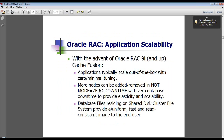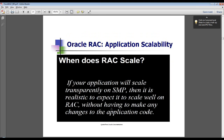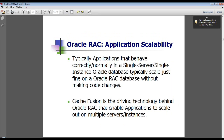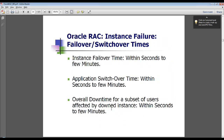How do applications adapt to Oracle RAC? Typically, if an application is well written and is realistically expected to scale well within a single box or an SMP, then it will theoretically and generally scale pretty well on Oracle RAC without having to make any changes to the application code. Cache Fusion is the driving technology behind Oracle RAC that enables applications to scale out on multiple servers and instances within Oracle RAC.